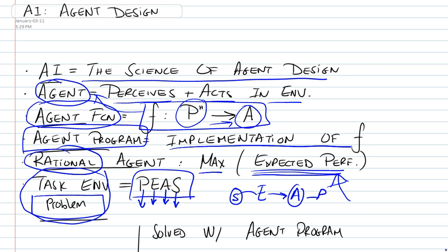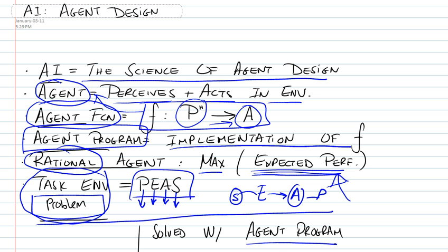In the second part of this video, we're going to be looking at how the agent program solves this problem. We're going to define this problem first, and then seek to solve it with an agent program. We're going to look at the four models that are available to solve this problem.